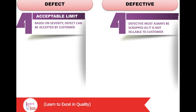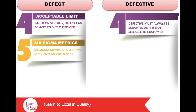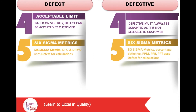If a product is not usable, it is considered defective. In the Six Sigma approach, the metrics Defects Per Unit (DPU) and Defects Per Million Opportunities (DPMO) are used to measure process performance — these measure the number of defects, not defectives. Whereas the metrics Percentage Defective, PPM (parts per million), PPB (parts per billion), and PPT (parts per trillion) are also used to measure process performance, and these measure the number of defective parts, not defects.